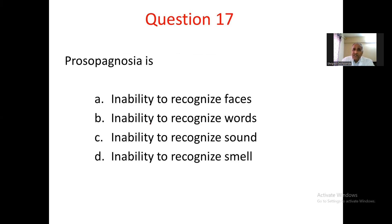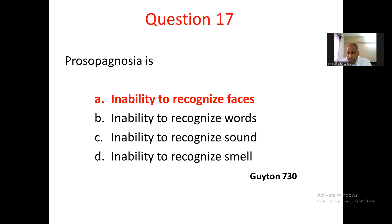Question number 17. Prosopagnosia is: A. Inability to recognize faces, B. Inability to recognize words, C. Inability to recognize sound, D. Inability to recognize smell. Inability to recognize smell is anosmia. Inability to recognize sound is auditory agnosia. Inability to recognize words is dyslexia or alexia. The correct response is A — inability to recognize faces.